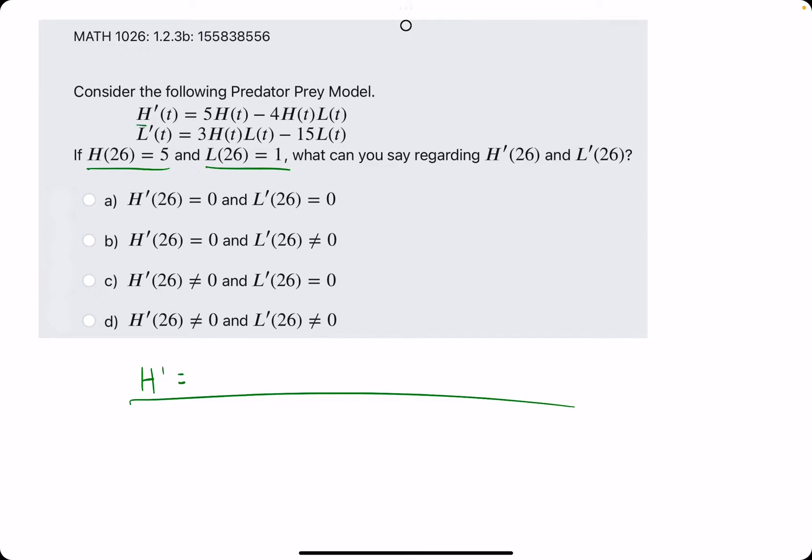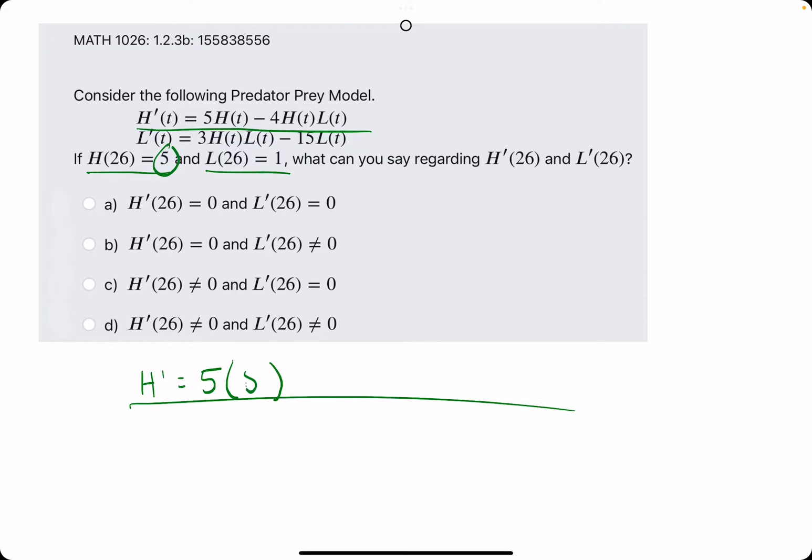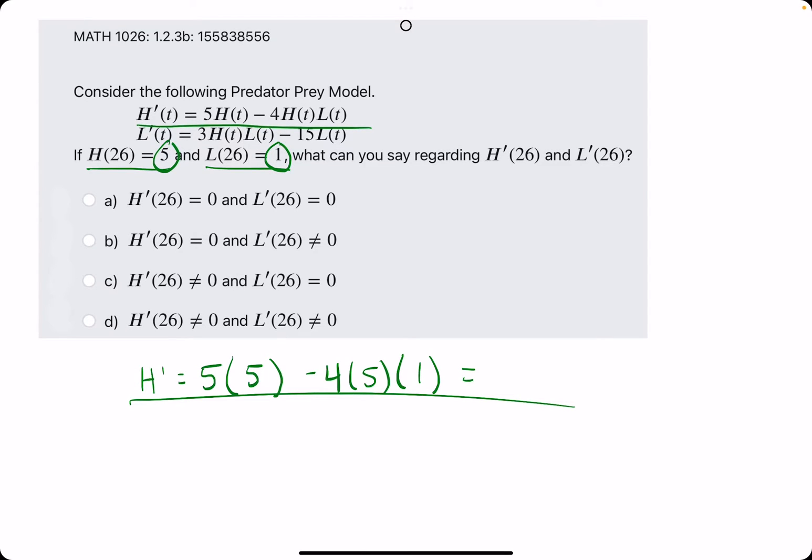So for h prime, we are using this 5 times h. In place of h, we are plugging in the h value provided, which is 5. So 5h or 5 times 5 minus 4 times h, which is 5, times l, which is 1. Let's go ahead and calculate this. We get 25 minus 20, which is 5.